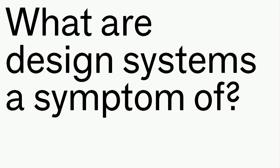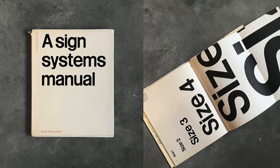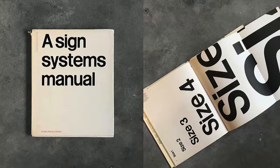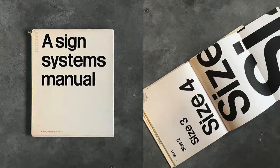We'd like to begin by asking a question we think about a lot in our design practice: what are design systems a symptom of? Or said another way, what is the reason why design systems have become so popular over the last five years? A good way to answer this is to look back in history. We don't have to go far — graphic standard manuals became really popular in the late 60s. A standards manual is, in spirit, actually very close to what we call a design system today: you take an identity, chop it up into reusable parts, and make a manual to explain how to use the system.